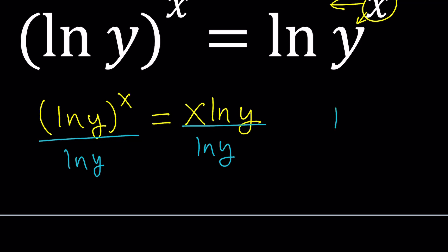Provided that ln y does not equal 0, which means y does not equal 1. Now, what happens if y equals 1? Think about it for a second. You're going to get 0 to the power x, right? ln y is going to be 0 if y is 1. So you're going to get 0 to the power x. And then since y is 1, you're going to get 1 to the power x. And 0 to the power x is 0 as long as x is not 0. Some people claim that 0 to the power 0 is 1. But anyways, that's a different story.